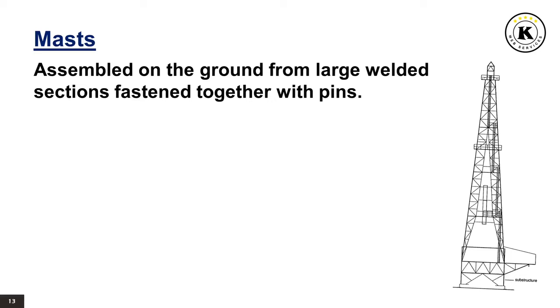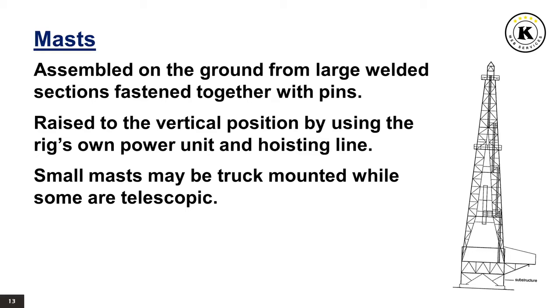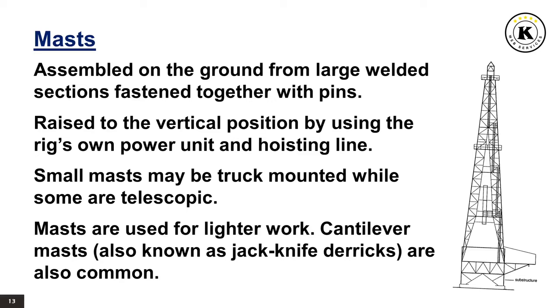Masts are assembled on the ground from large welded sections fastened together with pins, then raised to the vertical position using the rig's own power unit and hoisting line. Small masts may be truck-mounted while some are telescopic. Rigging up time for masts tends to be less than for conventional derricks. Rigging up time is the time spent to assemble a mast into the vertical position on site, including installation of the power unit, all cables and piping. Masts are used for lighter work. Cantilever masts, also known as jackknife derricks, are also common.